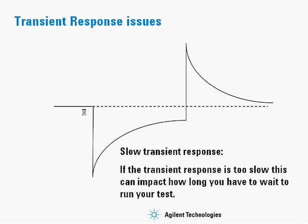The other problem you can run into is a transient response that's too slow. The power supply may still be settling by the time the next transient occurs. This is a problem when making fast measurements in a test system, going from one condition to the next. If the power supply hasn't settled yet, you can't make an accurate measurement. Slow transient response time can affect how long it takes to run through your tests, which can cost you money. I hope this has outlined some of the issues and how to measure transient response in a power supply.